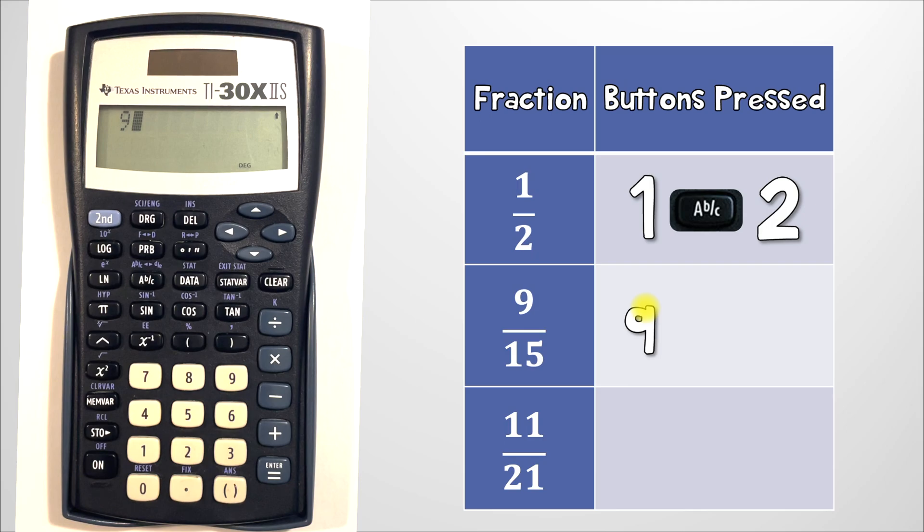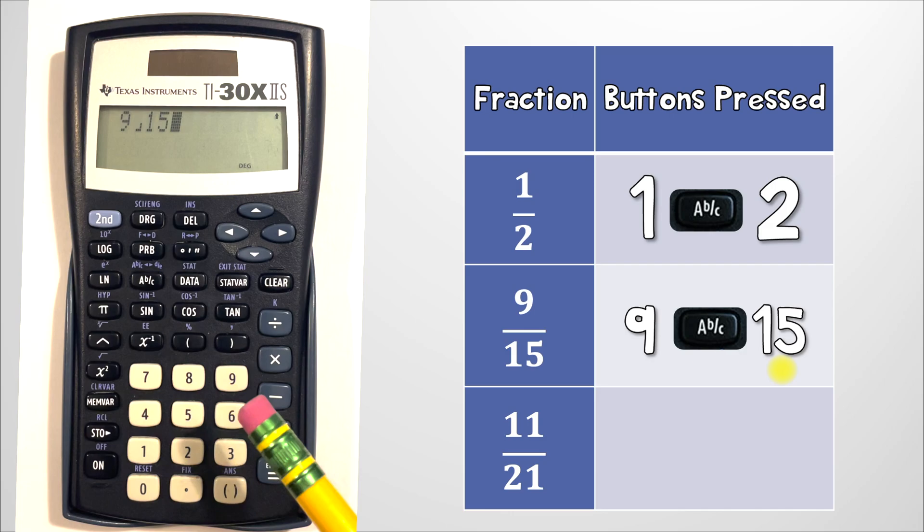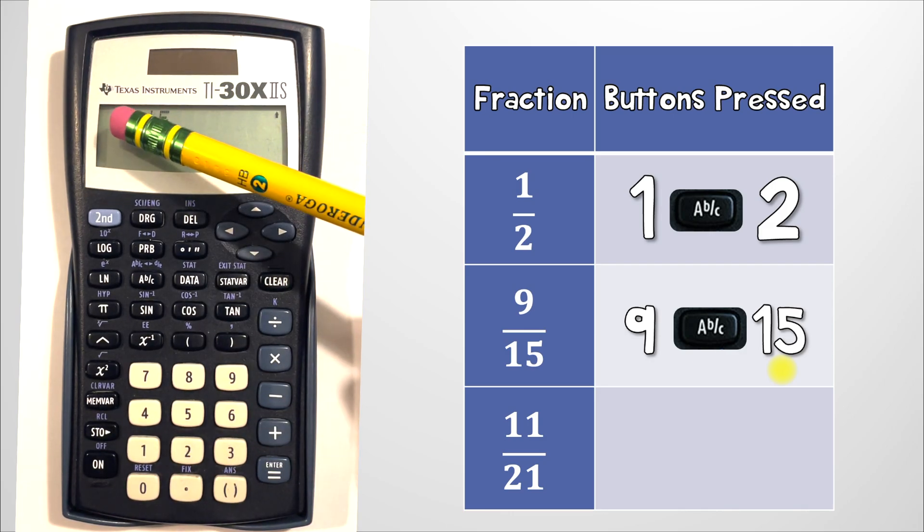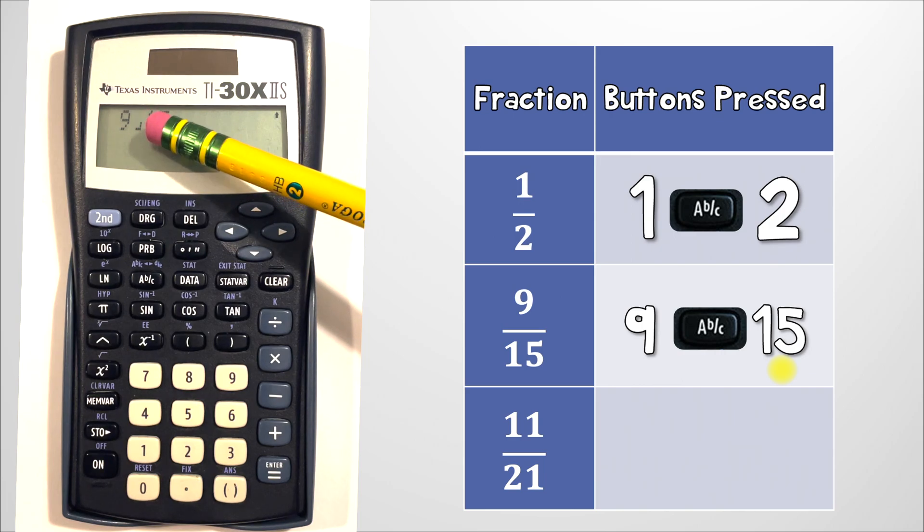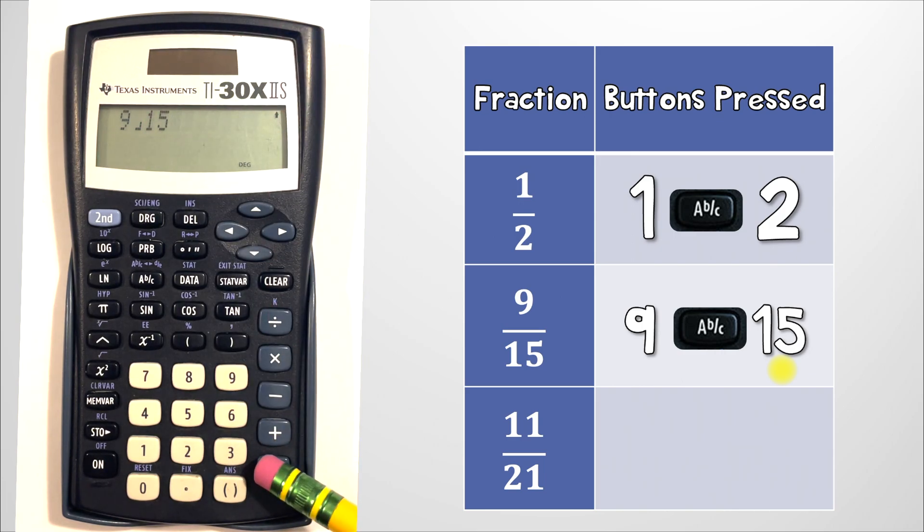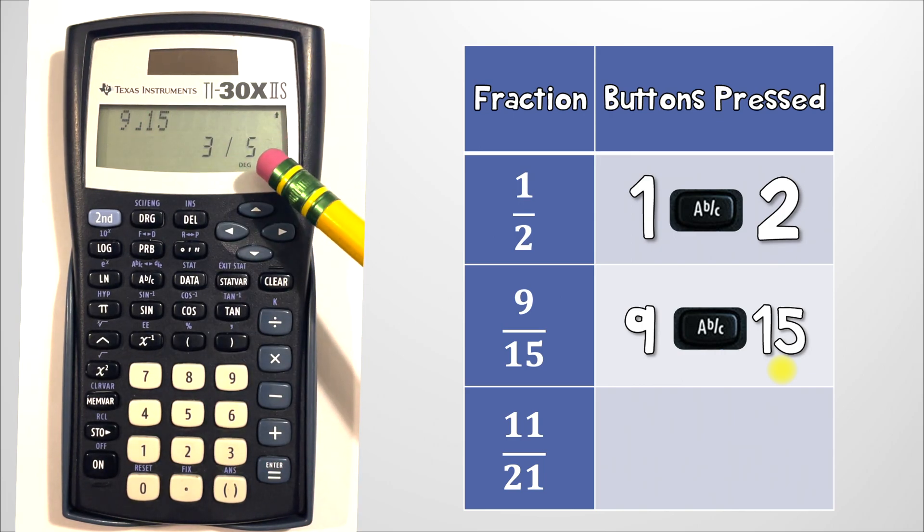After that we'll press our ABC button and then finally we'll enter 15. I'll call this a little bracket so it'll say 9 bracket 15 and the calculator reads that as 3 over 5.